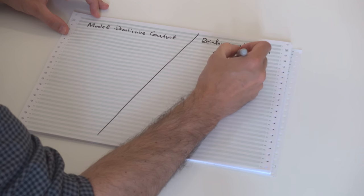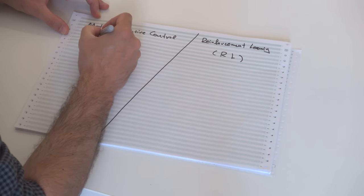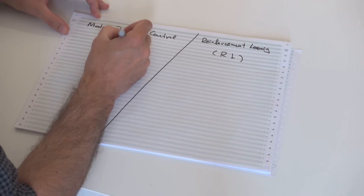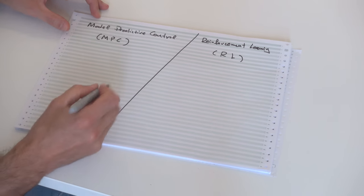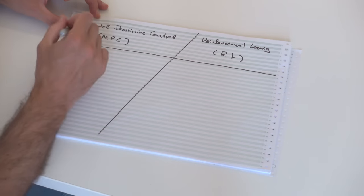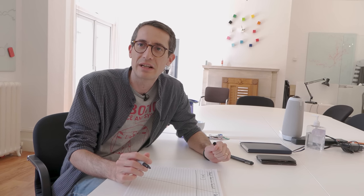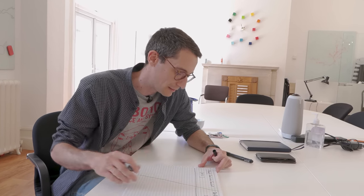So this is MPC. MPC is on the more traditional control side of the spectrum. You have models of your system and you can essentially simulate forward your model, decide what your control inputs would result in, and then judge whether what you're asking the robot to do is successful or not by some metric.